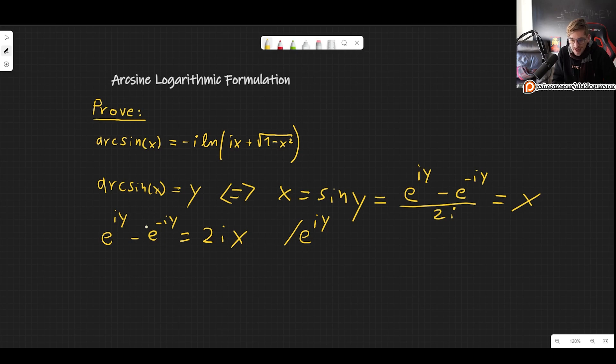Because when we do that, we will get rid of this negative exponent. So we will get e to the 2iy minus 1 is equal to 2ix e to the iy.